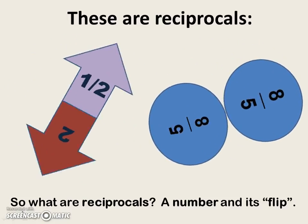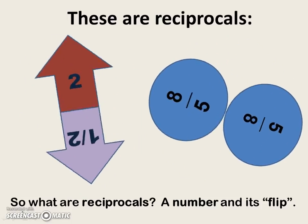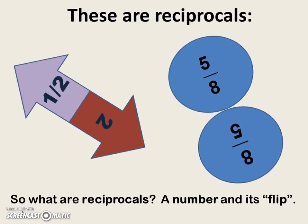Two, we turn two upside down, we get a half. Eight-fifths, we turn it upside down, we get five-eighths.